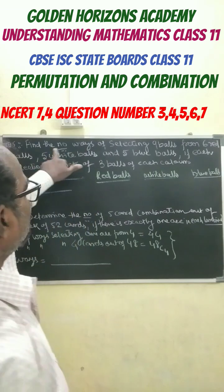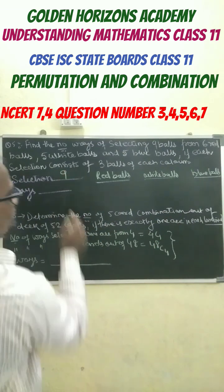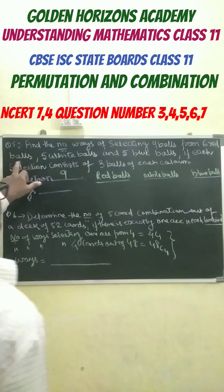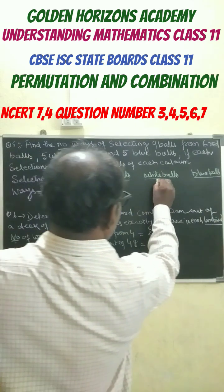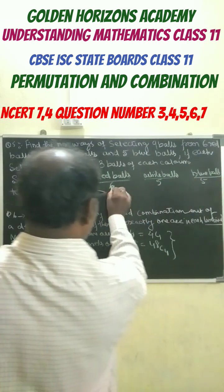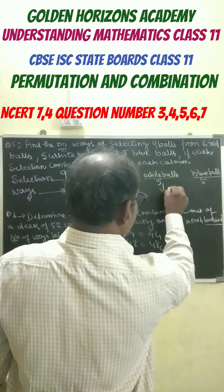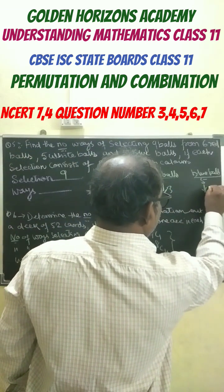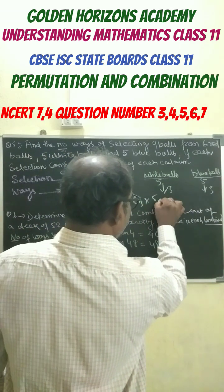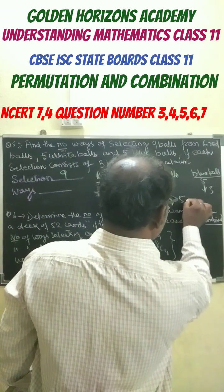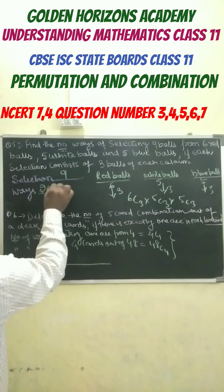Our next question: find the number of ways of selecting 9 balls. You have to select 9 balls from 6 red balls, 5 white balls, and 5 blue balls. From each color, you have to select 3 balls each. So our answer should be 6C3 times 5C3 times 5C3. If you multiply this, it will be approximately 2000 ways.